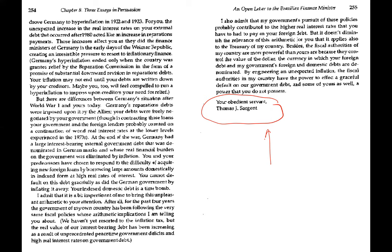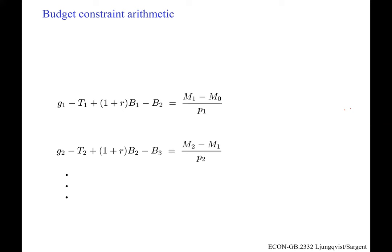There are messages in those letters that we're going to express in math to describe what's going on. We go back to our two basic equations and find some interesting things. Here's the government budget constraint: G minus T is government expenditures minus tax collections, plus interest payments on debt, minus new debt issued, equals money printed to cover the difference.